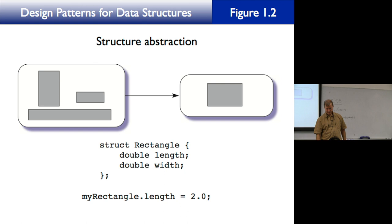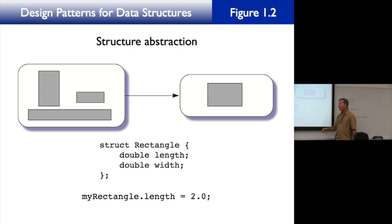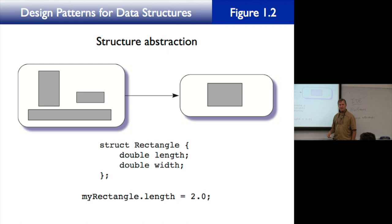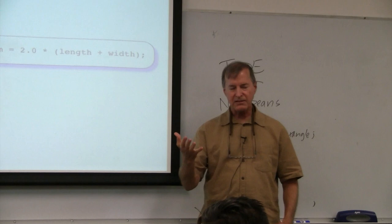The diagram shows one general rectangle object — it could be tall and skinny, long and flat, golden ratio, whatever — and all of those possible rectangles are abstracted into one struct. Just as a variable of a type can hold any of the type's possible values, one Rectangle struct can represent any of those rectangles. We're combining two variables of double type into one structure — that's structure abstraction.